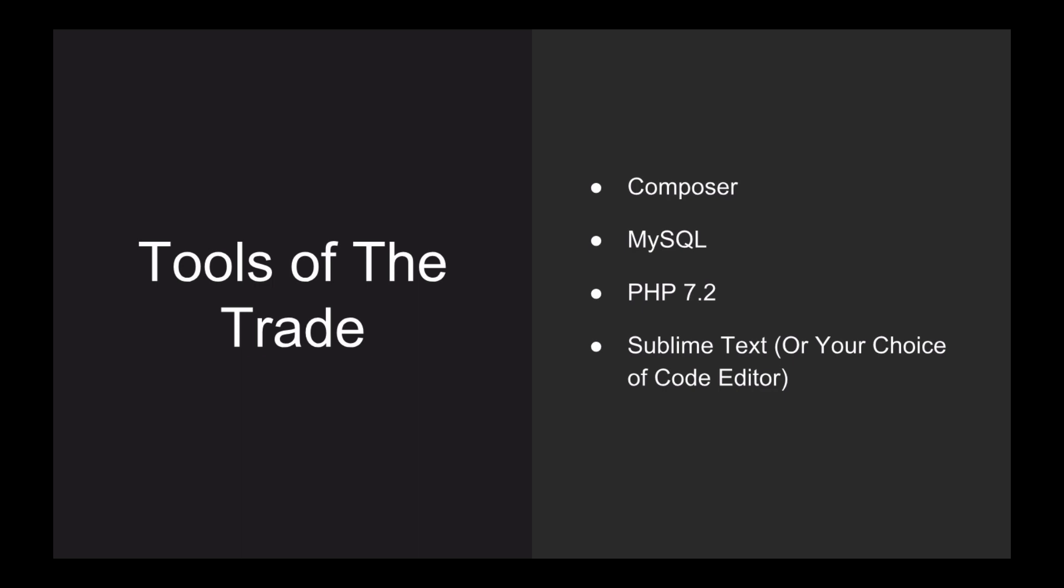I would suggest as a package for Sublime Text is to use the PHP Companion package, because it just makes things very simple for importing classes and importing models and controllers and traits, which we will get into.